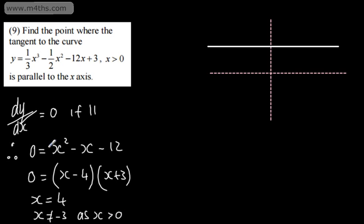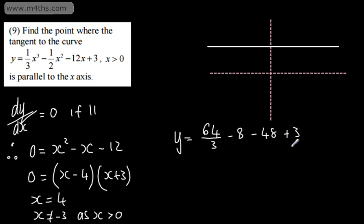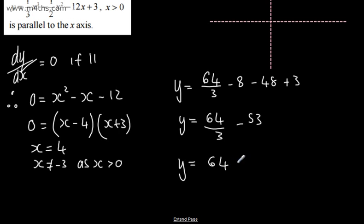So all I need to do is substitute in x equals 4: y is going to be 4 cubed over 3, which is 64 over 3, minus 4 squared over 2, which is minus 8, minus 12 times 4, which is minus 48, plus 3. So y equals 64 over 3 minus 53. Converting to thirds: 64 over 3 minus 159 over 3, giving negative 95 over 3.